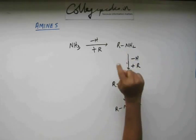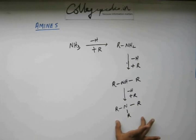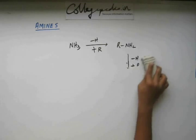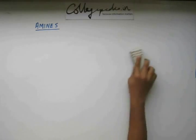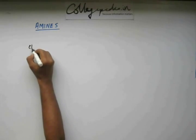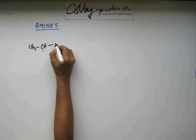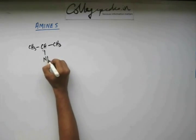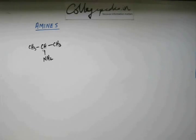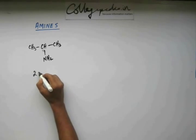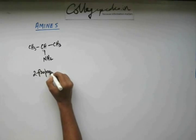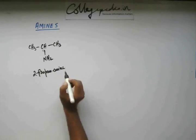Like if this is attached with one carbon, one degree amine, this is two degree amine, this is three degree amine. The naming of amines you must be knowing because we did it when we studied nomenclature. For example, if you have to name this compound, this compound is 2-propenamine.